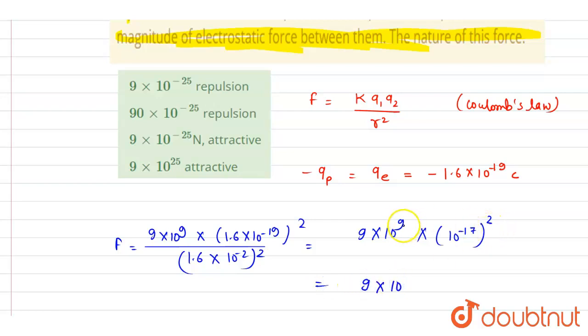Minus 34 minus of minus 4 is minus 34 plus 4, which is minus 30, so it is 9 times 10 to the power minus 25. And this will be an attractive force because they are of opposite sign.